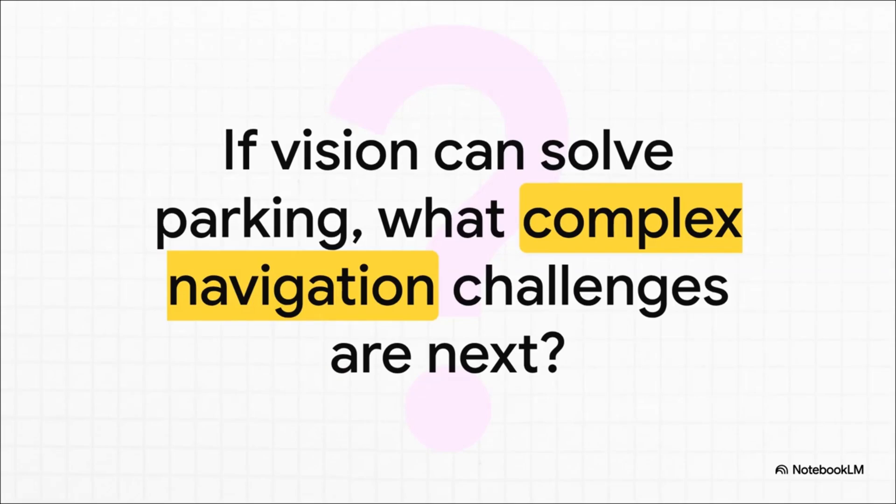And that leaves us with a pretty fascinating question to chew on, doesn't it? We've just seen how a smart vision-only system can solve the ridiculously tricky problem of parking—a task that requires immense precision. So if they can crack that nut, what comes next? What other complex, messy, real-world navigation problems are suddenly on the table now? That's something to think about.